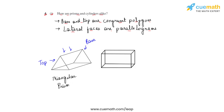We also see that this is a cuboid, where if we consider this to be the top part and this to be the base, we will see that this again represents a prism because the top and the base are congruent, and the lateral faces represent parallelograms in the case of this cuboid.